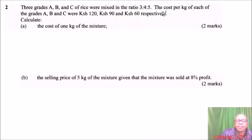Calculate: (a) the cost of one kg of the mixture for two marks, and (b) the selling price of 5 kg of the mixture given that the mixture was sold at 8% profit for two marks.